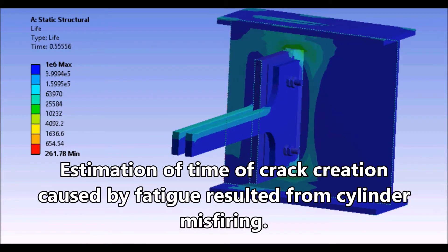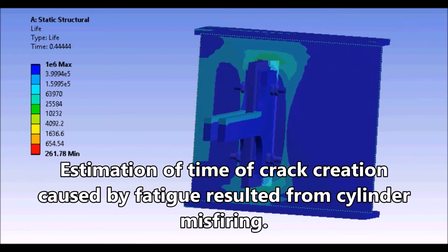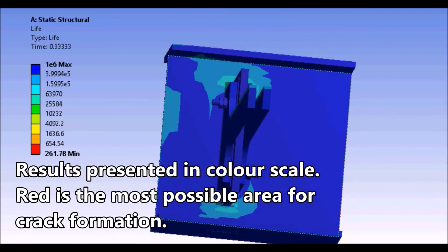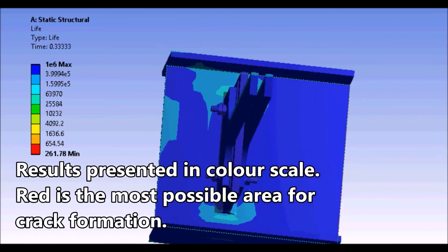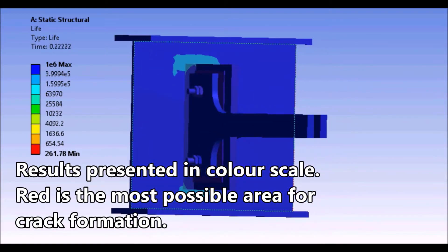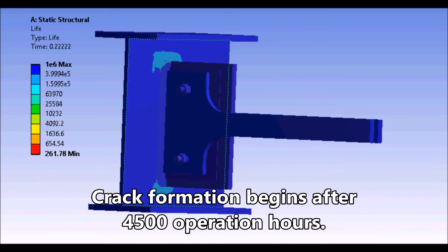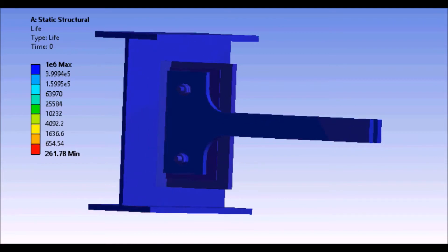Estimation of time of crack creation caused by fatigue resulting from cylinder misfiring. Results presented in color scale. Red is the most possible area for crack formation. Crack formation begins after 4500 operation hours.